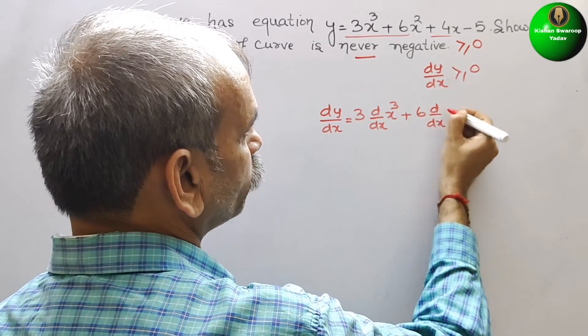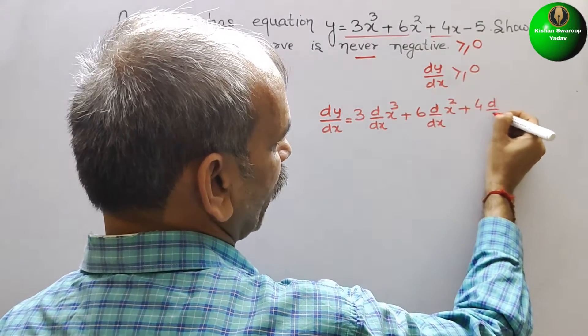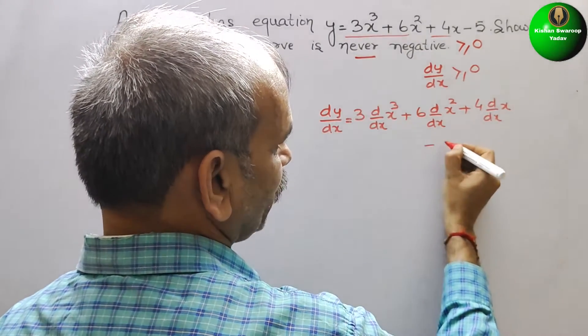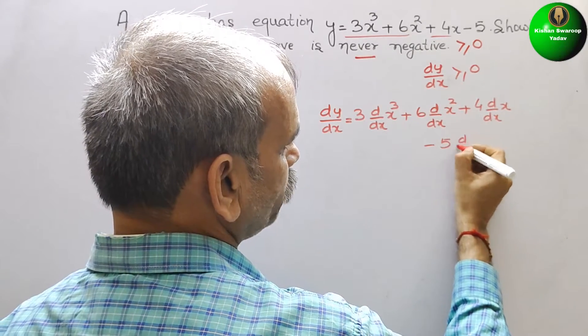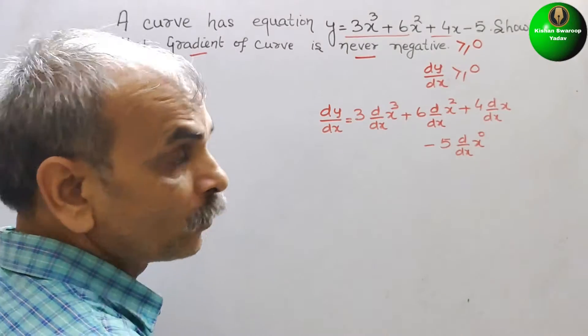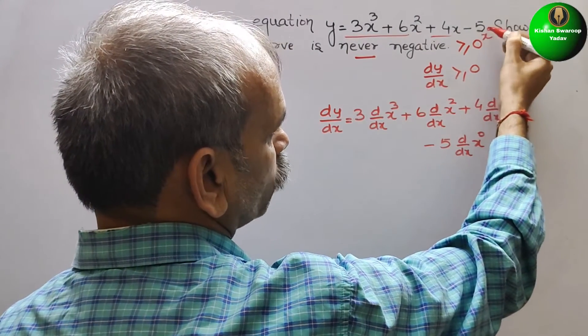+ 4(d/dx of x) - 5(d/dx of x⁰). So here in place of 5 we will write x to the power of 0 also.